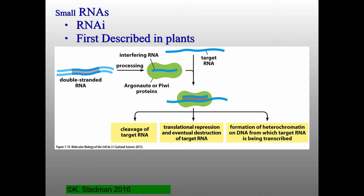There are also small non-coding RNAs, generally involved in a process called RNA interference, or RNAi. The process was first observed and described in plants about 30 years ago. A biotech company thought it would be a good idea to try to make a very bright purple petunia, so they cloned in another copy of the purple flower encoding gene into petunias, figuring the more purple gene product circulating in the plant, the more purple the flowers would be. In reality, the plant produced all white flowers. It took 10 to 15 years to figure out that RNAi is what led to white flowers being produced when you overexpress a purple flower gene.